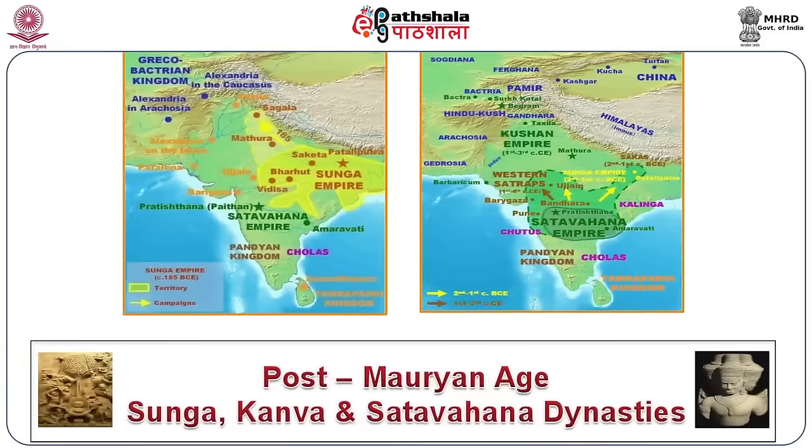In these Outlines of Indian History, you are going to learn about the history of three dynasties: Sunga, Kanwa, and Satavahana dynasties.